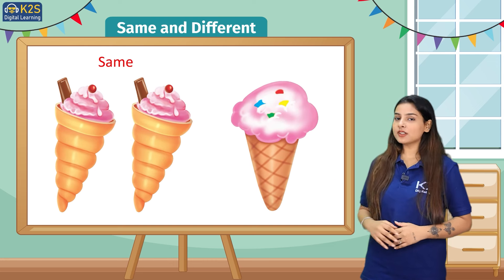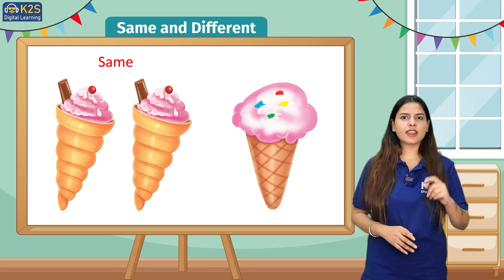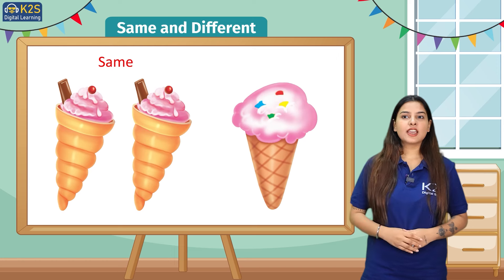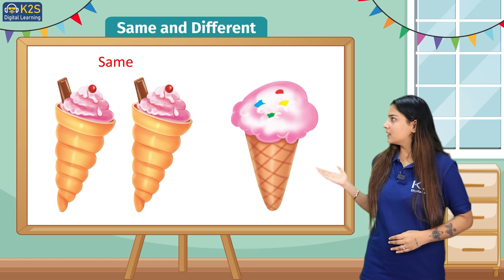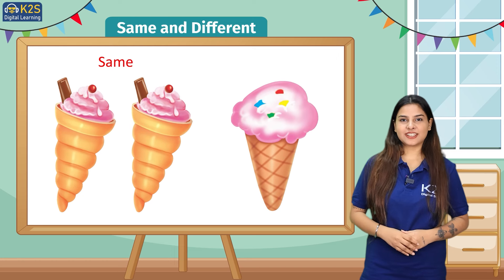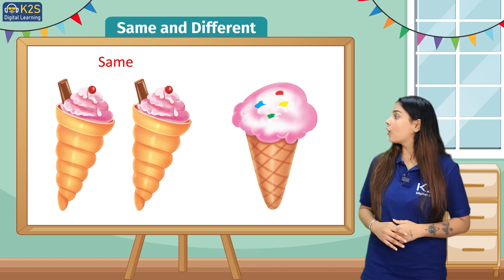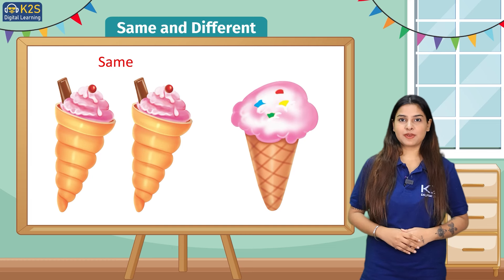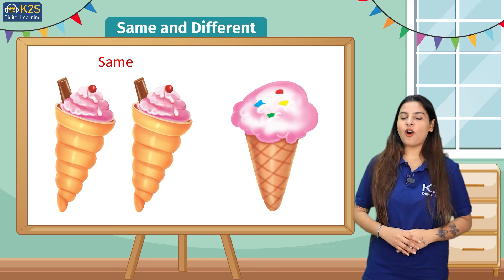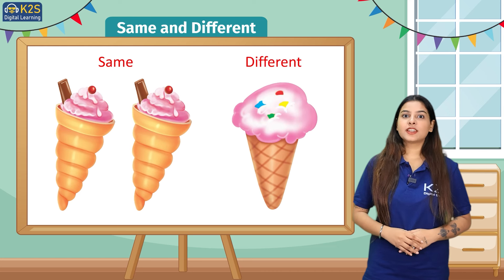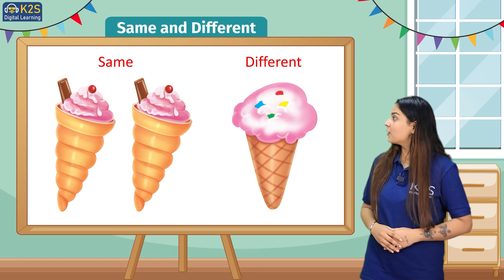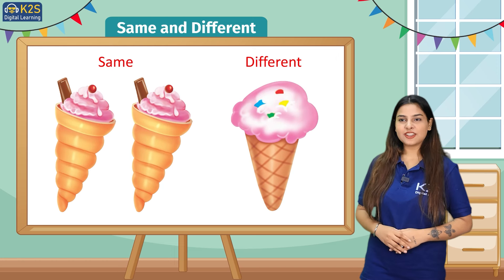In the second picture we have one ice cream which is different from the other picture having two ice creams. This ice cream does not have a chocolate or a cherry. Its cone is also of a different shape. This second ice cream is an example of different. Did you understand the concept? So tell me which is same and which is different.